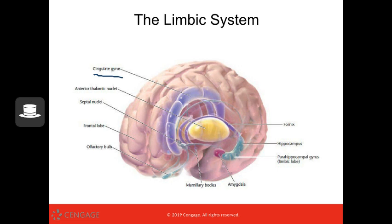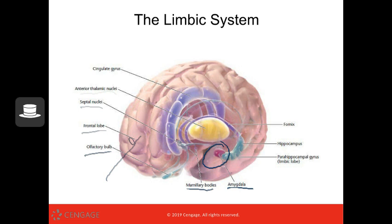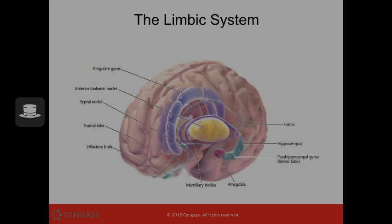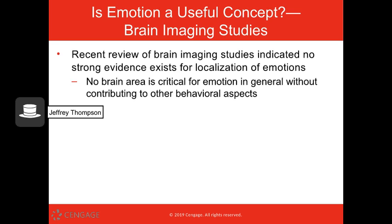The limbic system includes the cingulate gyrus, the anterior thalamic nuclei, the septal nuclei, our frontal lobe, the olfactory bulb, mammillary bodies, the amygdala — we'll talk about that one a lot — the hippocampus, fornix, and parahippocampal gyrus, or the limbic lobe. There's no one part of the brain that is the 'anger part' or the 'happy part.' Multiple parts of our brain are responsible for emotion; they work in concert and are also related to other things aside from just that emotion.